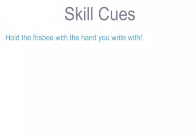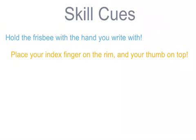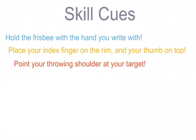Here are some helpful skill cues that you can use during the game. Hold the frisbee with the hand you write with. Place your index finger on the rim and the thumb on top. Point your throwing shoulder at your target.